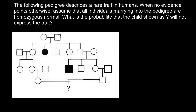There are two ways to do our calculations. We can find the probability for this child to express the trait, which involves fewer steps than calculating the probability for the child not to express the trait. If we know the probability for the child to be affected, we can easily find the probability for the child to be unaffected. So let's find the probability first for the child to be affected.